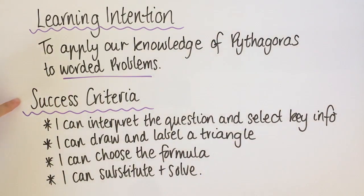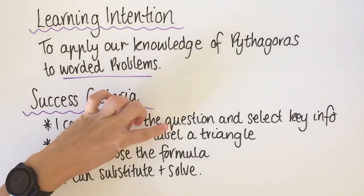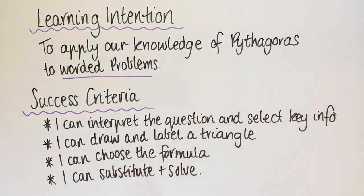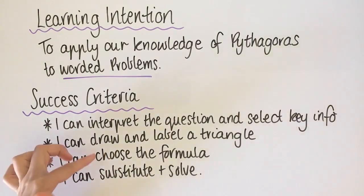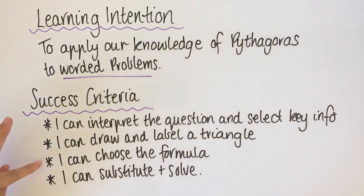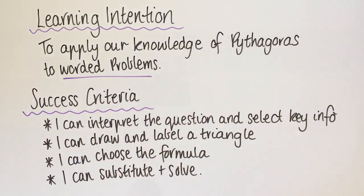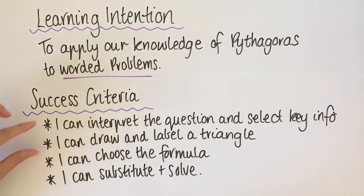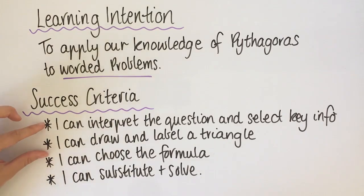Your success criteria is that you can interpret the question and select key information. Then you need to be able to draw a triangle and label it — it's really important to draw a picture because it really helps you visually understand what's happening. Then you need to choose the right formula and substitute and solve. We've had lots of practice at that part. Today it's about interpreting what's written.